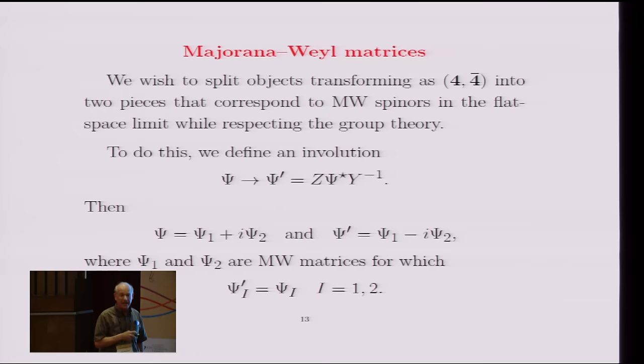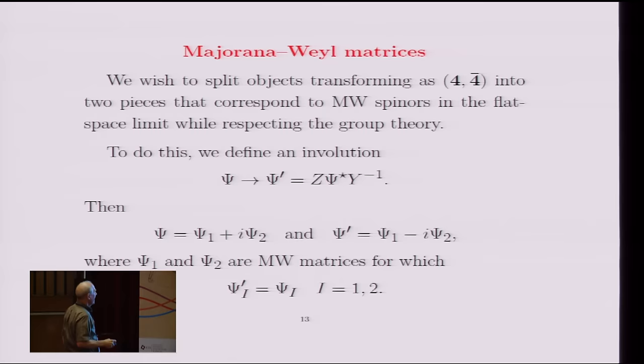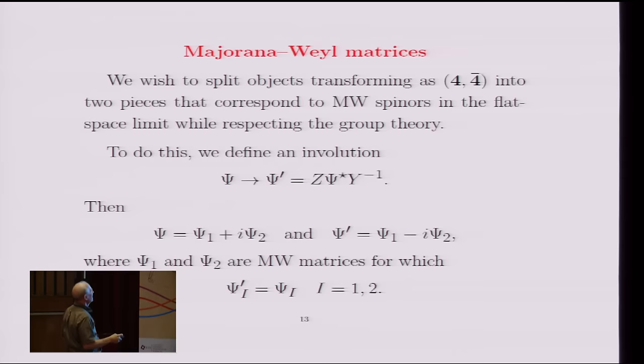And in the limit of flat space, this reduces to the standard way that you would define a Majorana-Weyl spinor. And so we can take an arbitrary one-form, like the one I had psi, or we could do it for theta as well. And you can write it as a sum of two pieces, psi_1 plus i psi_2. And then psi prime would be psi_1 minus i psi_2, where psi_1 and psi_2 are what I'm calling Majorana-Weyl matrices. And Majorana-Weyl matrices are the ones that satisfy this equation, where you're using this deformation of complex conjugation.